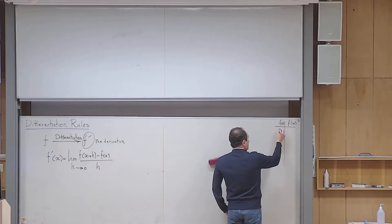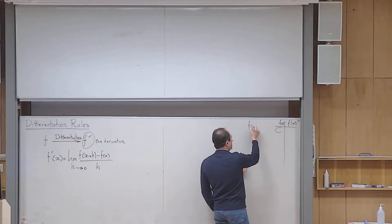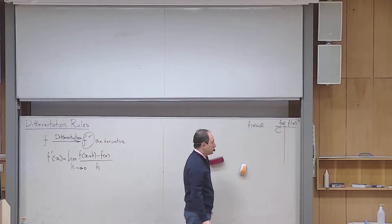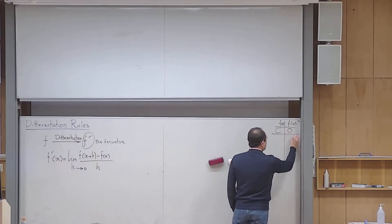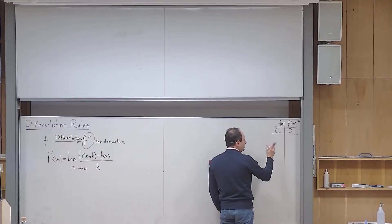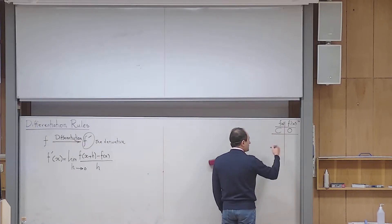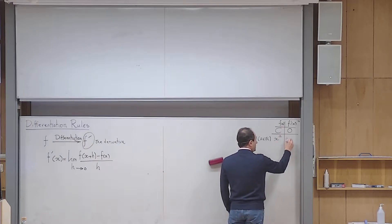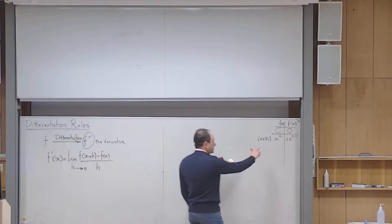The simplest possible function is the constant function, for example f(x) = √2. Regardless of the input, the output is always √2. If you face such a constant function, its derivative is zero. Then we also learned: if I give you x to some power a, the derivative is a·x^(a−1) — the exponent goes down and the power reduces by one.